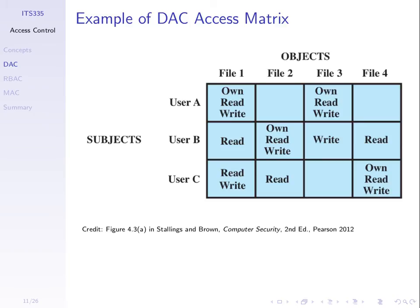On a real computer system there may be thousands or millions of objects, making the matrix very large with many empty elements where users have no permissions on most files. So instead of implementing it as a matrix, we condense this information into a list — what's called an access control list.